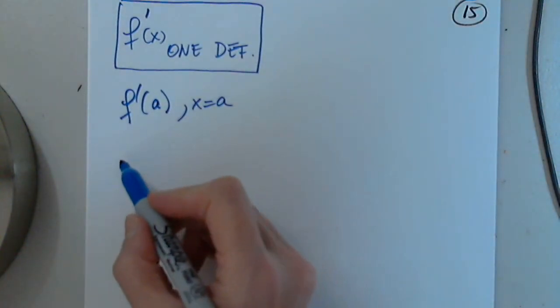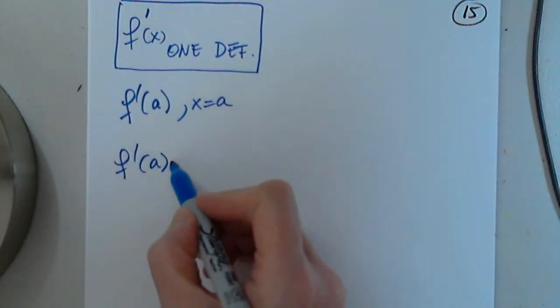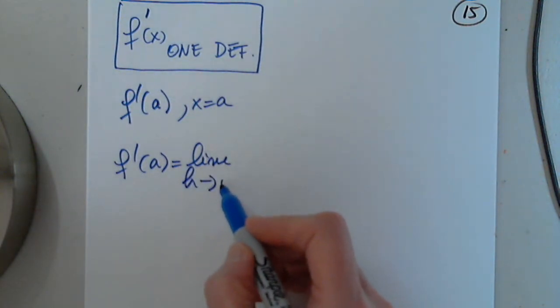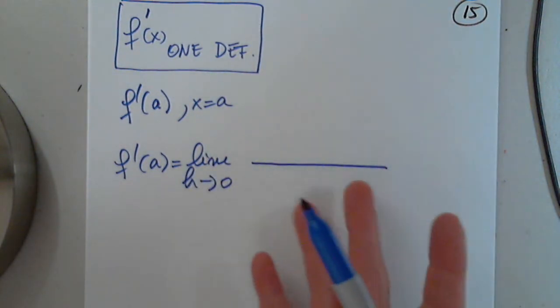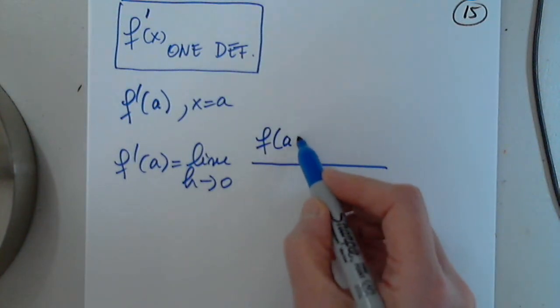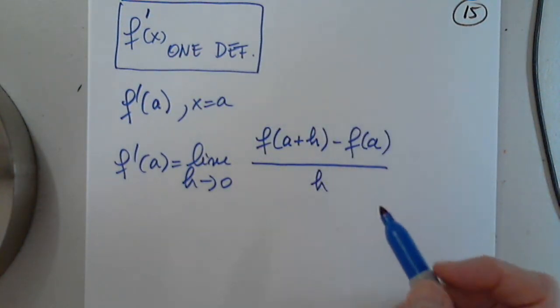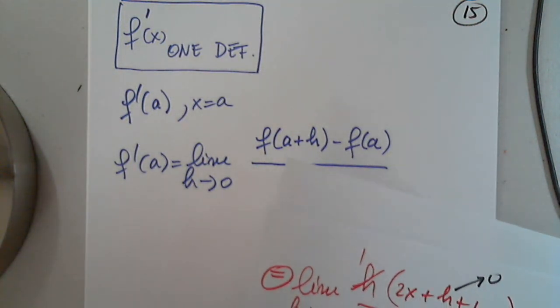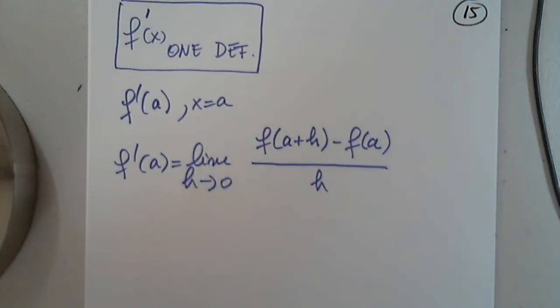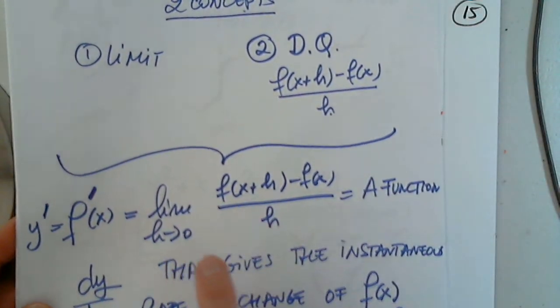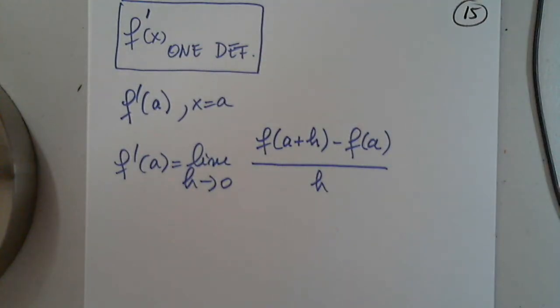So let me just state those two. So f prime of a limit as h approaches zero, and this is very familiar, of f of a plus h minus f of a divided by h. And you can say, what did you just do? You didn't do anything. Okay. What did you do? You just plugged in a here. What's the big deal? There is none. That's exactly what I did. I plugged in a.